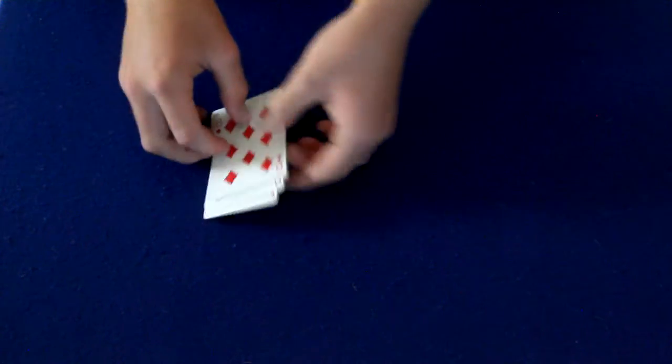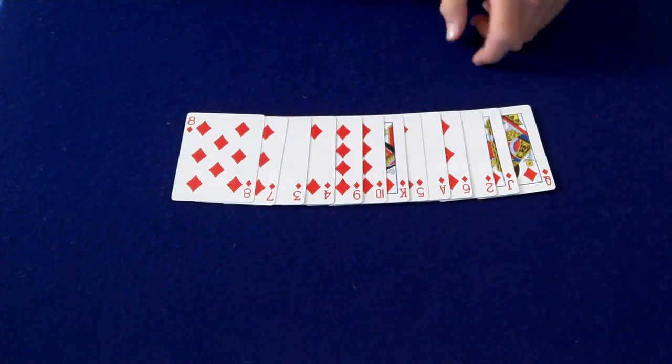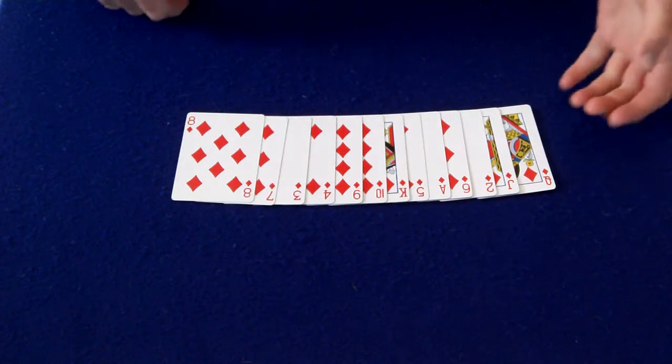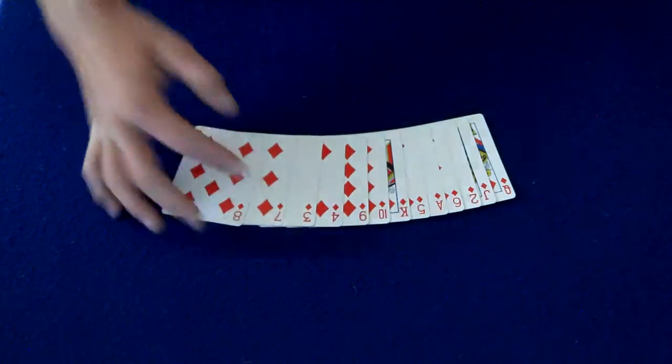Now we don't need the rest of the deck. I just want to show you that there's no particular order to these cards: Queen, Jack, 2, 6, 8, 5, King, 10, 9, 4, 3, 7, 8. There's absolutely no order here.